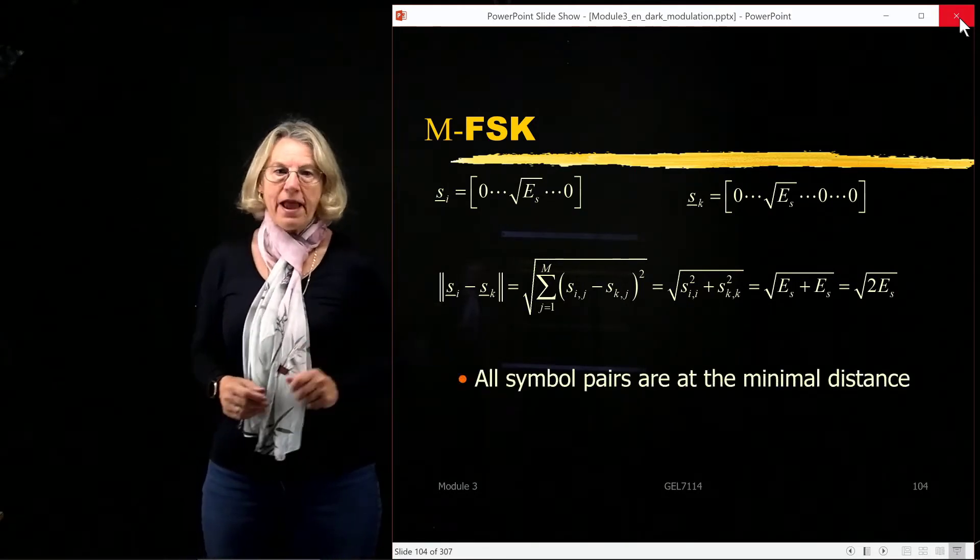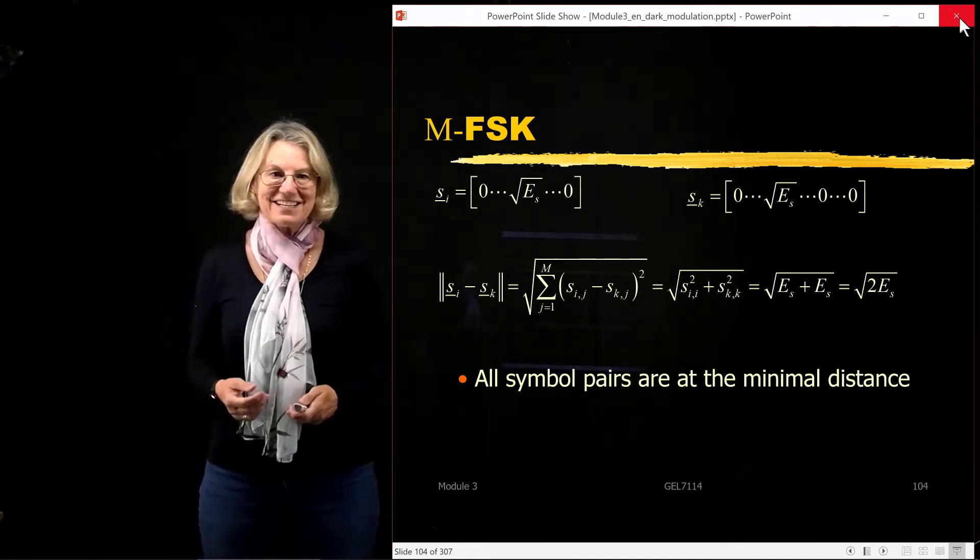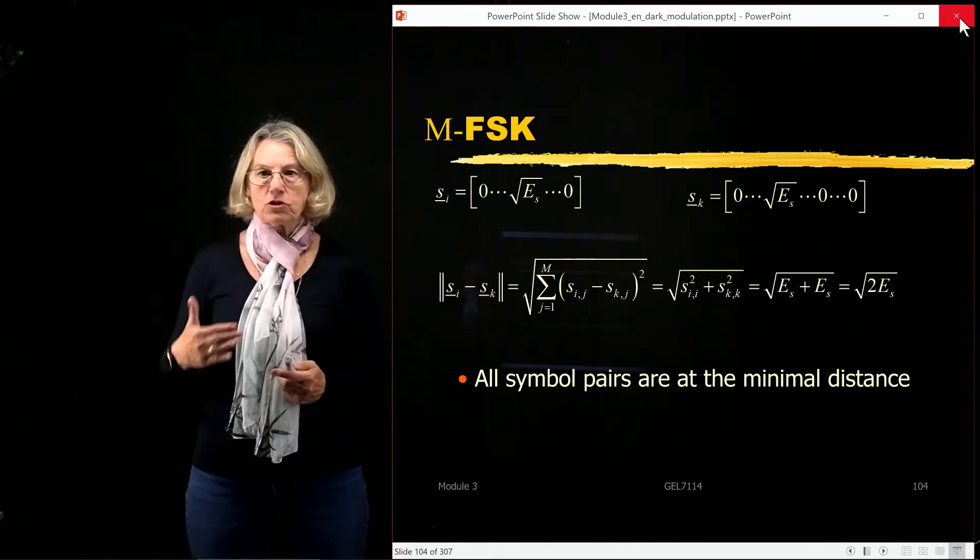It all has to come from the symmetry of this constellation. So all symbol pairs are at the minimal distance because they're all at the same distance. So that is the minimal distance.